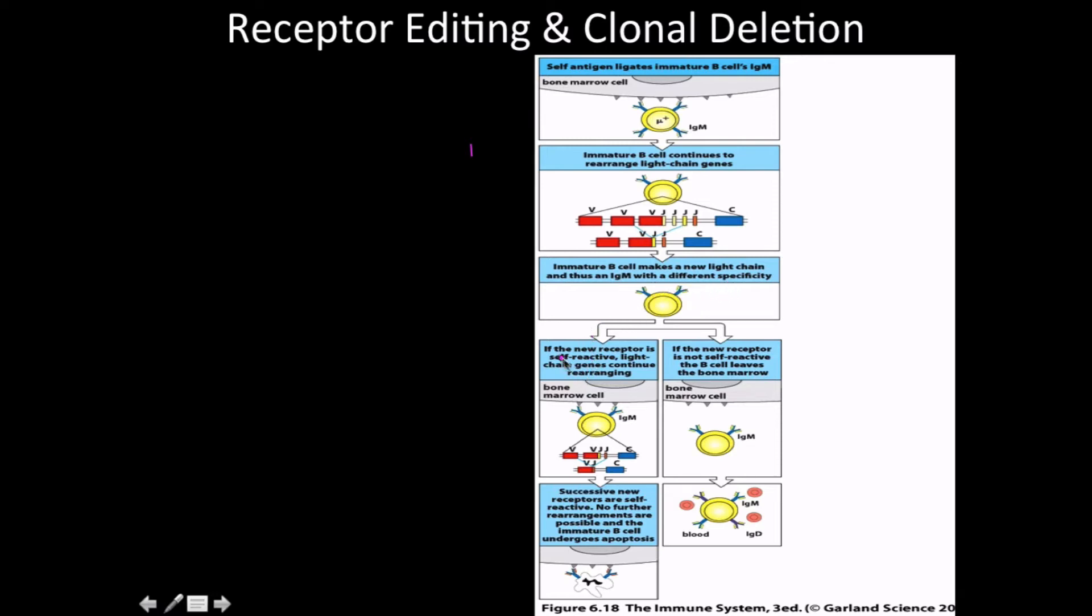If this new receptor is self-reactive, we're going to keep trying. We'll try again and again. If it works, then we go ahead and leave and develop onward. If it doesn't work, we keep trying. Once we've recombined everything that we have and nothing's left, we undergo apoptosis.